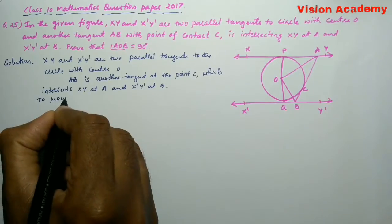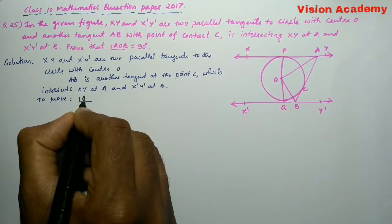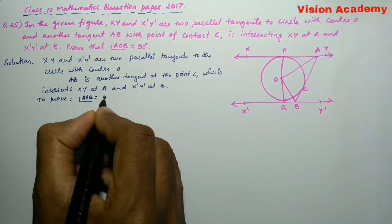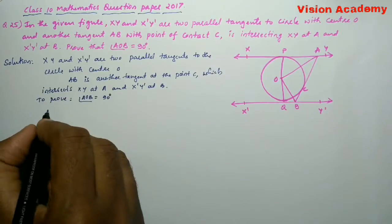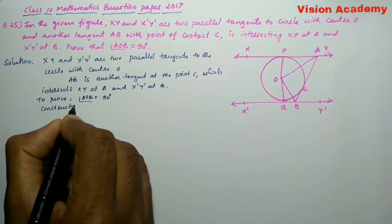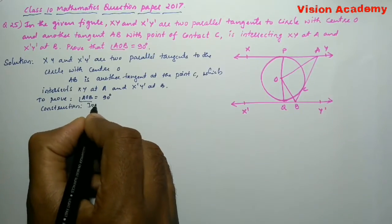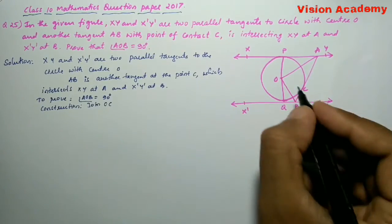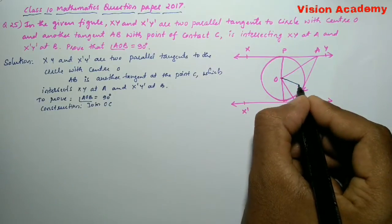To prove angle AOB is equal to 90 degrees. Construction: join OC. So, let us join OC.